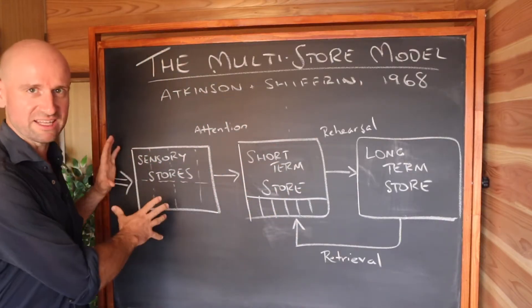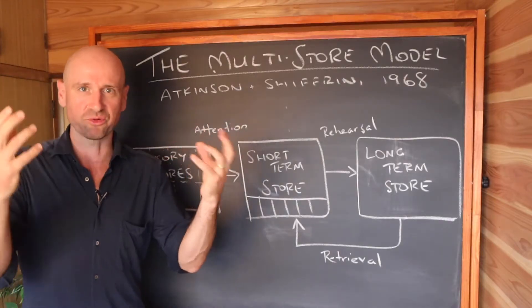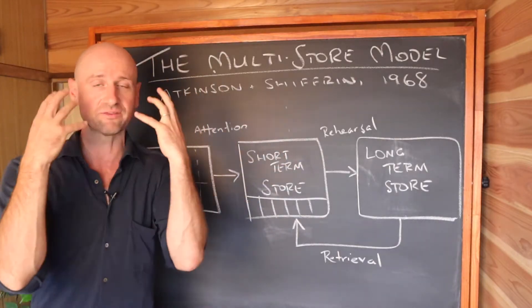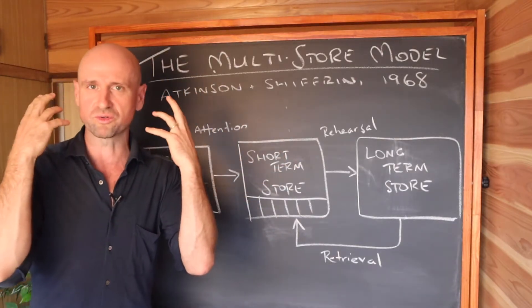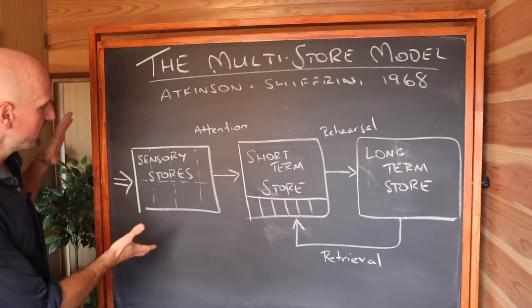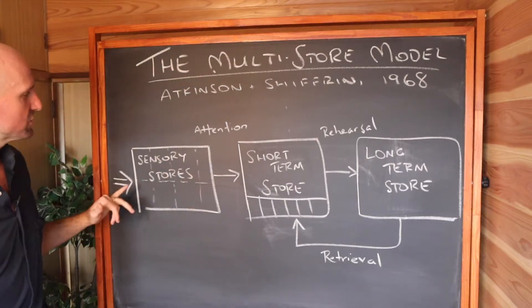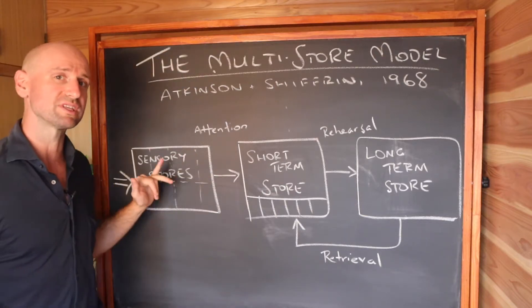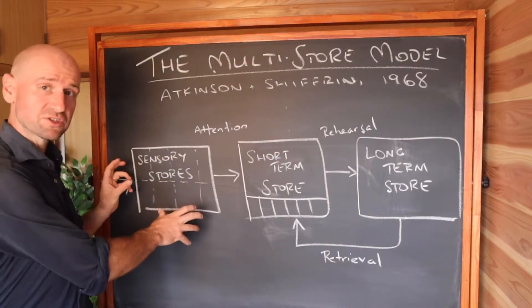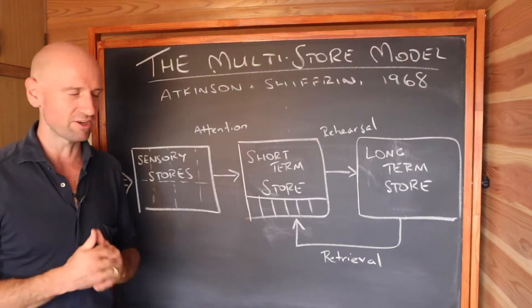Let's begin with the sensory stores. In order to remember something, information has to pass through your senses. You're hearing my voice right now, you're seeing this diagram — this stuff is coming through your visual and auditory senses. We eat something, we taste something, we feel something. So information passes into our sensory stores. Atkinson and Shiffrin suggested there were multiple sensory stores — they called them sensory registers — different stores for different types of information: what we see, hear, smell, taste, et cetera.